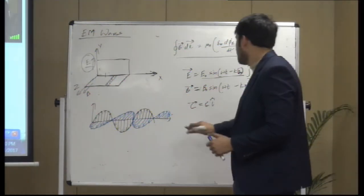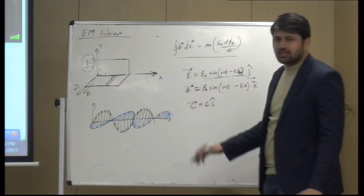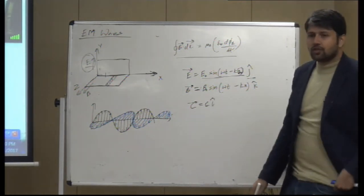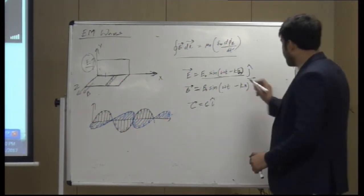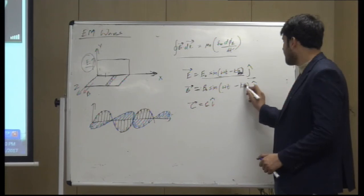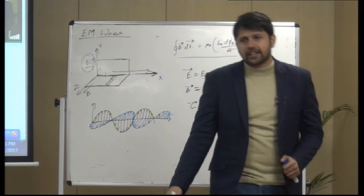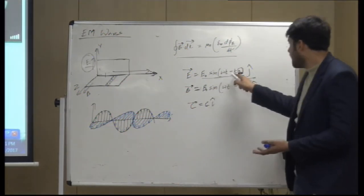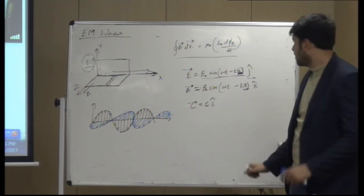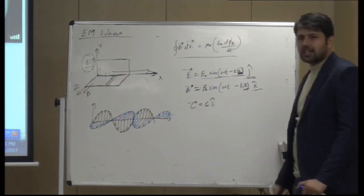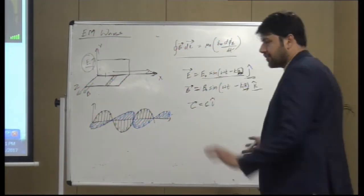The electric field E and magnetic field B and the direction of motion would always be perpendicular to each other. In the equation, x represents the direction of motion. So if a wave moves in the z direction, we write omega t minus k z. Here, j-cap and k-cap represent the unit vectors in which the electric field and magnetic field are present.